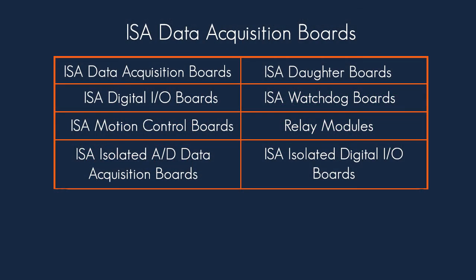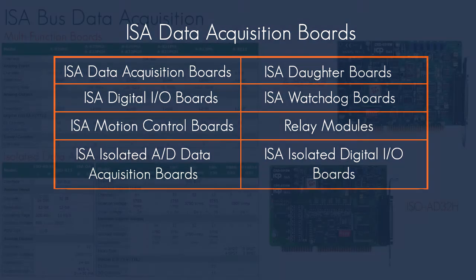ISA data acquisition boards are available in daughter boards, watchdog boards, digital I/O boards, motion control boards, isolated AD and digital I/O boards, and relay modules.